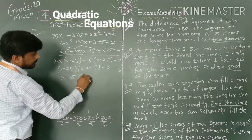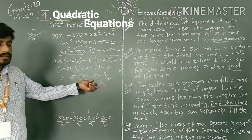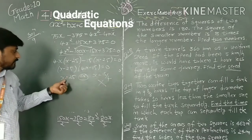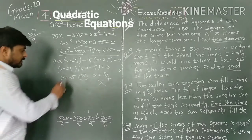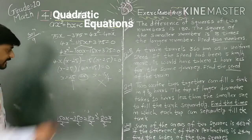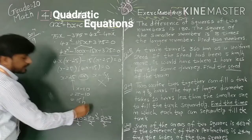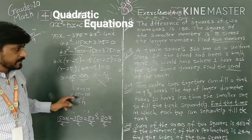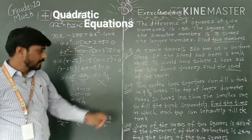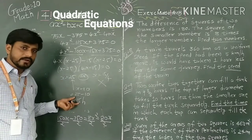x = 15/4 is not possible because it would make the larger tap's time x - 10 negative. Therefore x = 25. The smaller tap takes 25 hours and the larger tap takes 25 - 10 = 15 hours. These are the final answers.